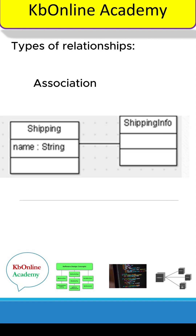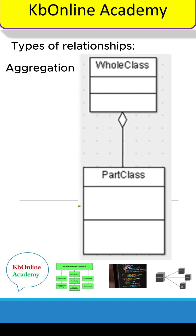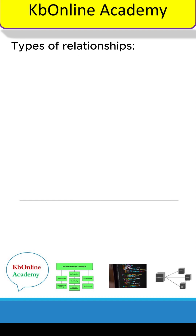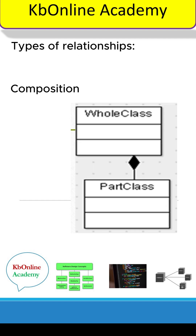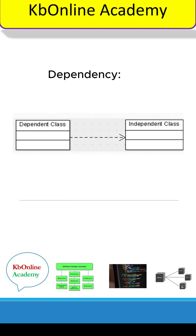The types of relationships are: association, which is a simple structural connection; aggregation, which is a strong association between the whole larger and the part smaller classes; composition, which is a special kind of aggregation between the whole and the part classes; and dependency, which is the relationship between the dependent and the independent classes.